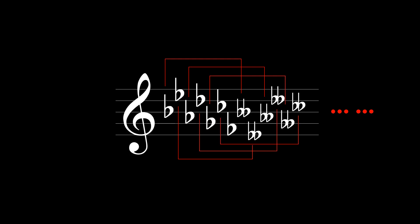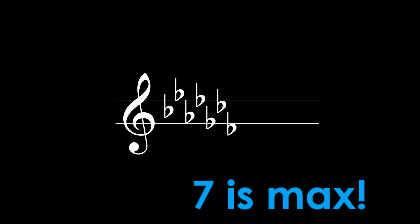So mathematically, the furthest possible we can go in terms of the number of symbols that can appear in a key signature is seven. Well, actually, there is another far more intuitive and straightforward way to see why it has to be seven.